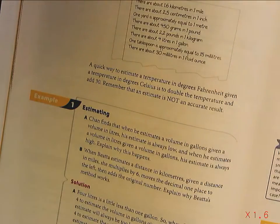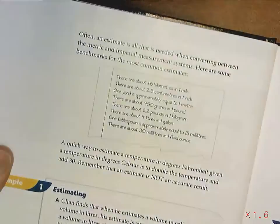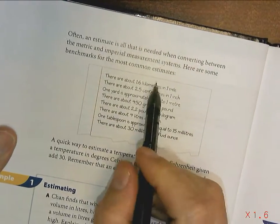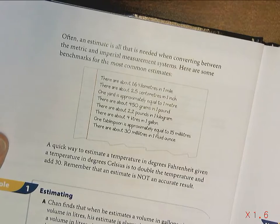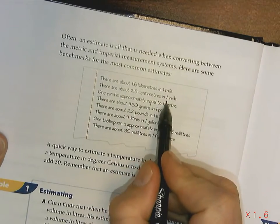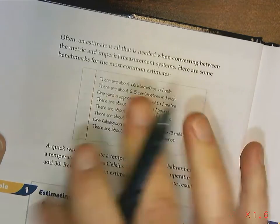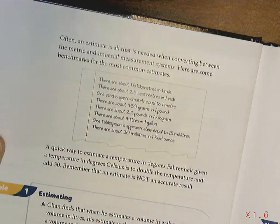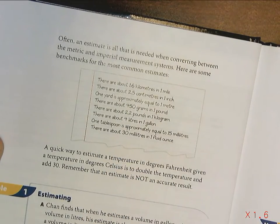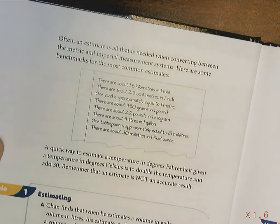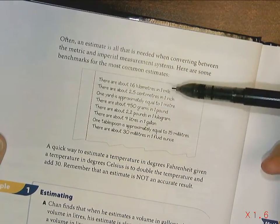Your textbook isn't using that accurate of conversions. These are what they're using: they're saying that there's about 1.6 kilometers in a mile, they're saying there's about 2.5 centimeters in an inch where we were calling that 2.54. So that will make a difference in your answers whether or not you're using 2.5 or 2.54. I'm okay with either one that you use.